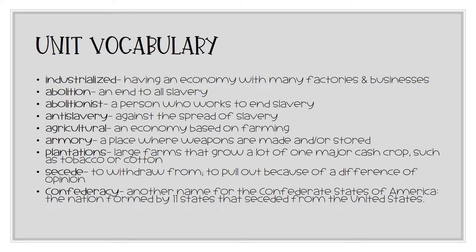The following is important vocabulary for this unit. Industrialized means having an economy with many factories and businesses. Abolition is an end to all slavery; an abolitionist is a person who works to end slavery. Anti-slavery means against the spread of slavery. Agricultural is an economy based on farming. An armory is a place where weapons are made and/or stored. Plantations are large farms that grow a lot of one major cash crop, such as tobacco or cotton. Seceded means to withdraw from, to pull out because of a difference of opinion. And confederacy is another name for the Confederate States of America, the nation formed by 11 states that seceded from the United States.